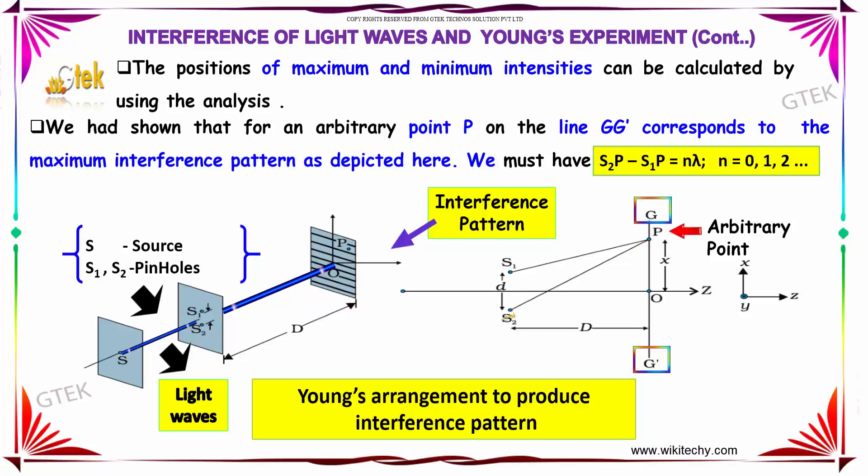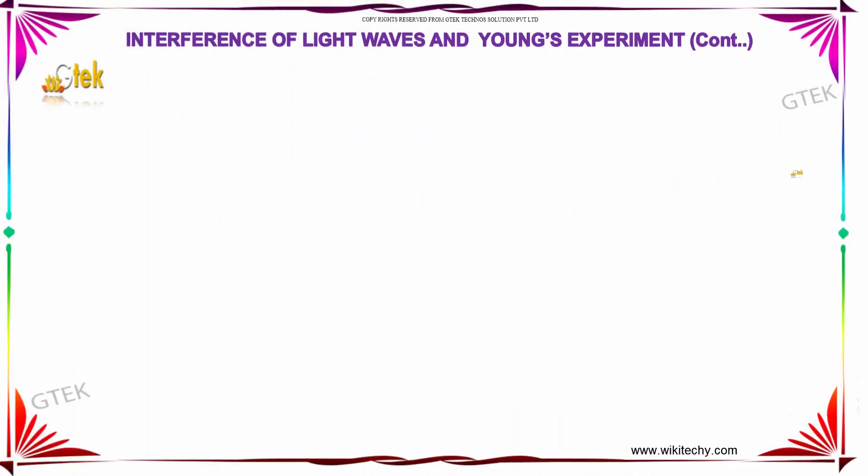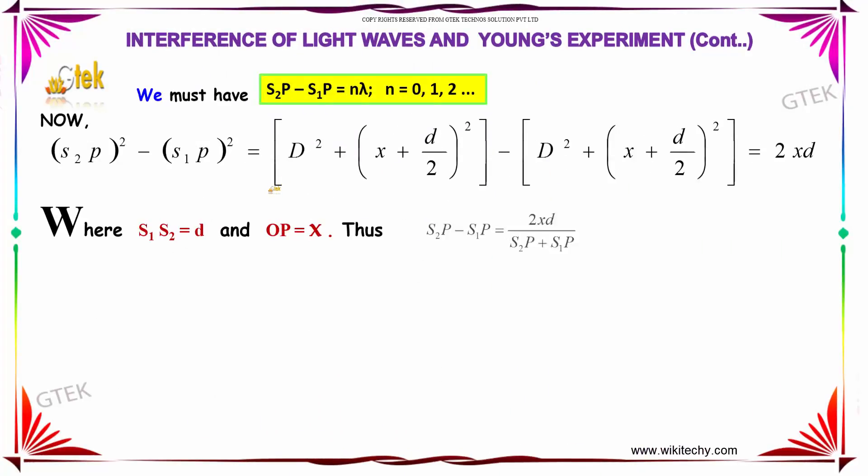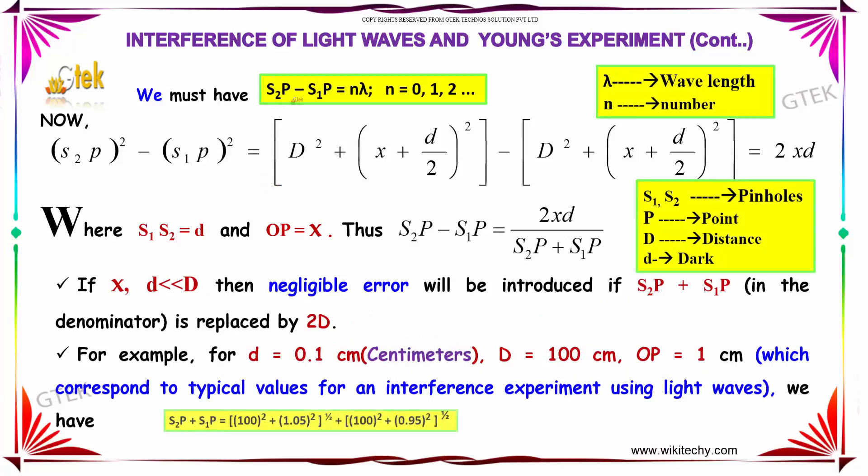we must have S2P minus S1P is equal to N lambda where N is equal to 0, 1, 2, etc. We must have S2P minus S1P is equal to N lambda.